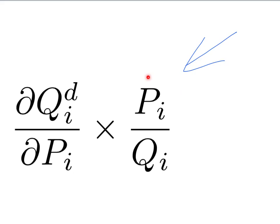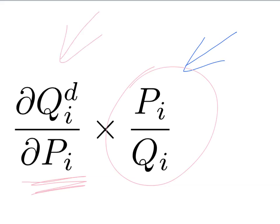Now, in order to use this formula we need to know the slope of the demand curve. But if we know the slope of the demand curve and we're interested in how quantity changes when there's a change in price, why do we need the second bit? Or in other words, why don't we just use the slope of the demand curve whenever we are interested in, for example, how a change in price due to government policy changes the quantity traded in a market?